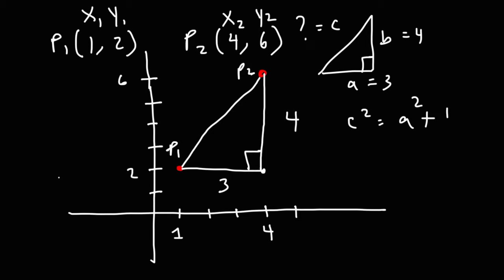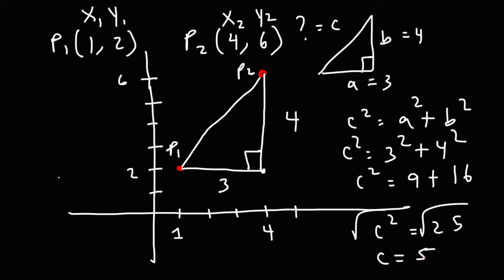C squared is equal to A squared plus B squared. So that's 3 squared plus 4 squared. And so we get 9 plus 16, which is 25. And then taking the square root of both sides gives us the value of C. So C, or the hypotenuse, is 5.